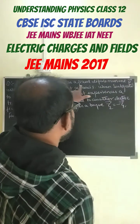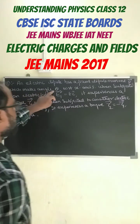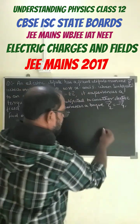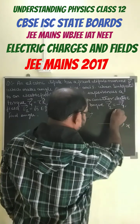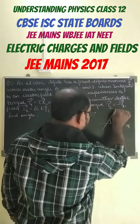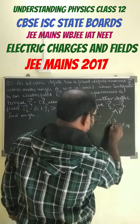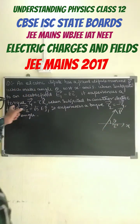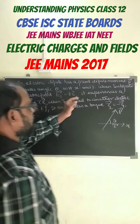An electric dipole has a fixed dipole moment which makes angle theta with respect to the x-axis. So we can set up the formation: this is the x-axis making an angle theta, this is the moment, and this is the electric field. Now E1 is given this value.